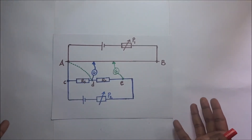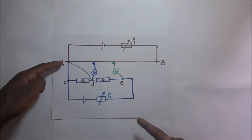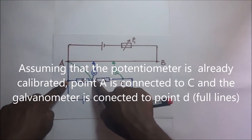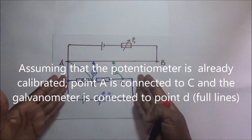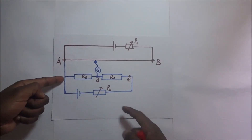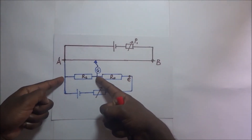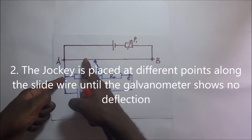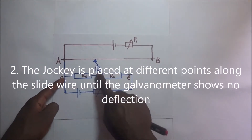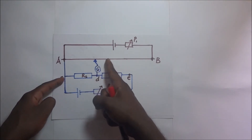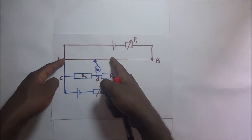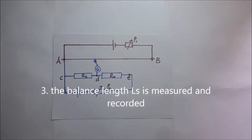To redraw this: in step one, we connect part A to part C and the galvanometer to part D. We tap the jockey across the slide wire AB, moving it to different points until the galvanometer shows no deflection. When that balance point is achieved, we measure and record the balance length LS.